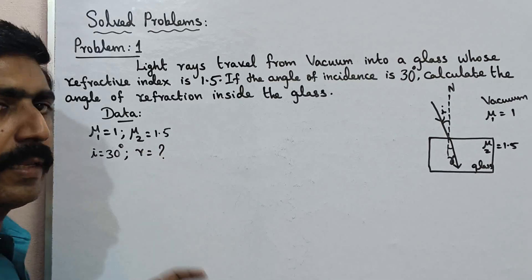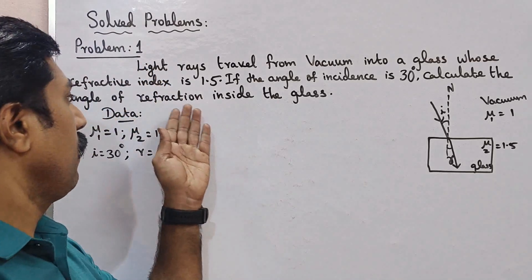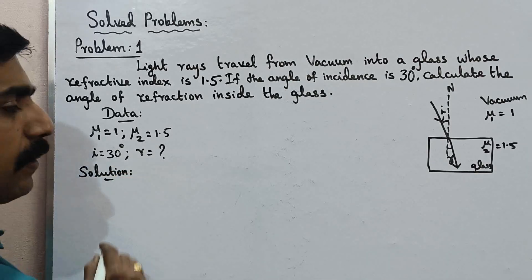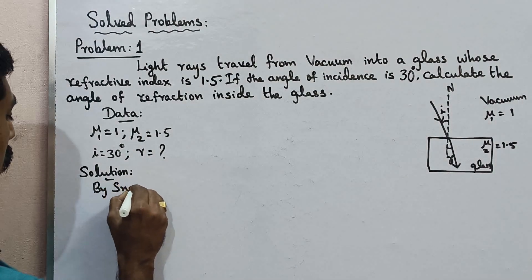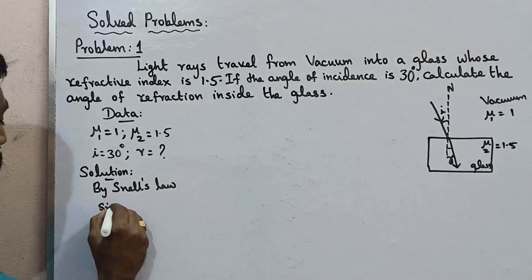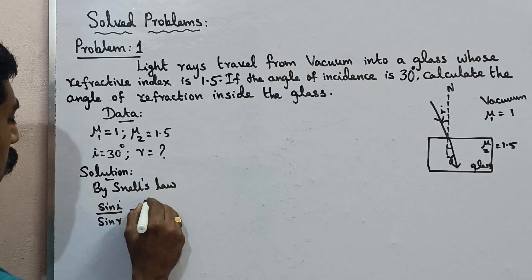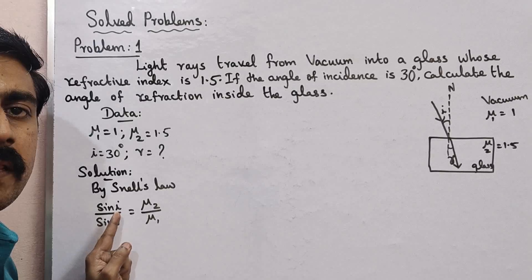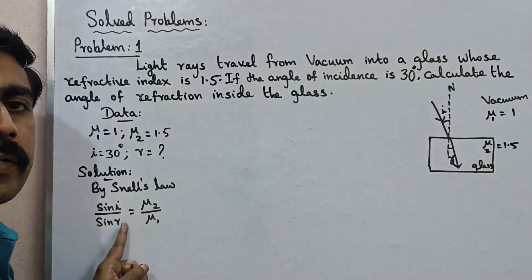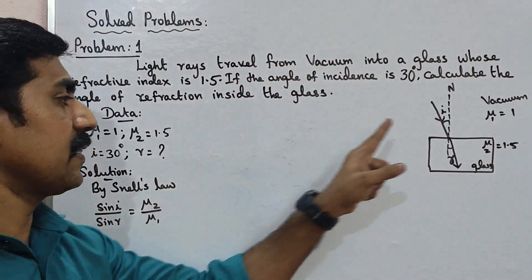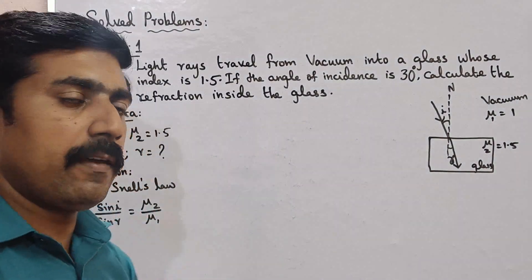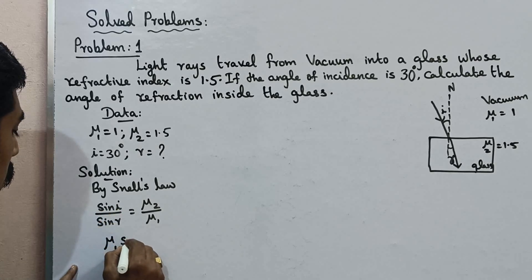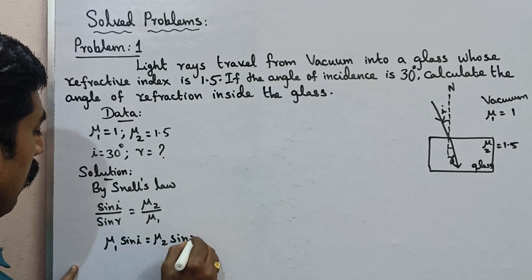We need to calculate the angle of refraction, denoted by r. The refracted ray bends at the surface. The data: mu1 = 1, mu2 = 1.5, angle of incidence i = 30°, and angle of refraction r = ? This is a straightforward application of Snell's law.